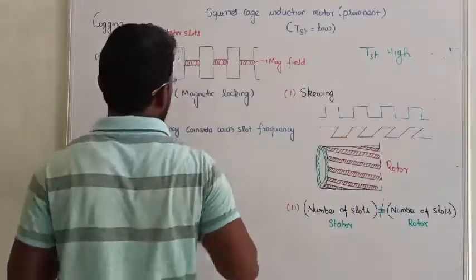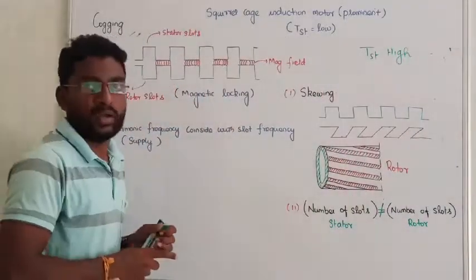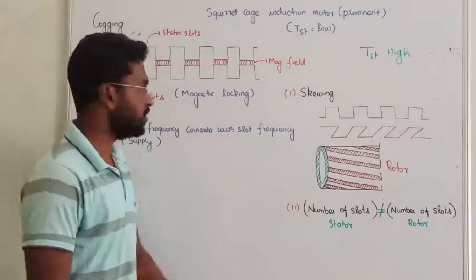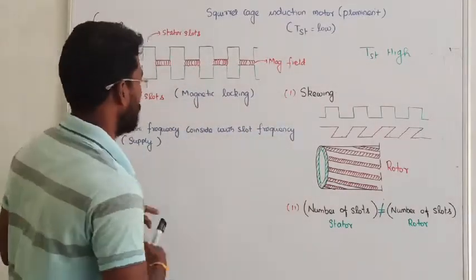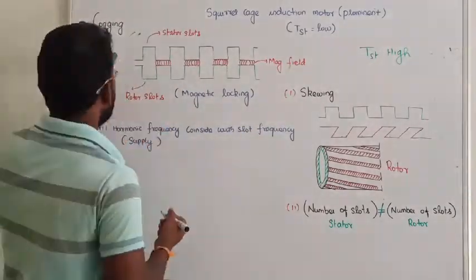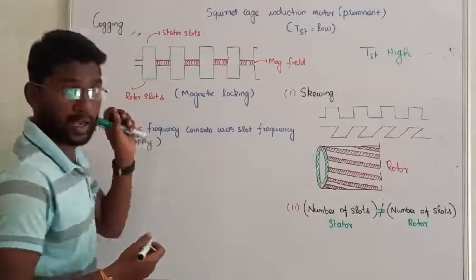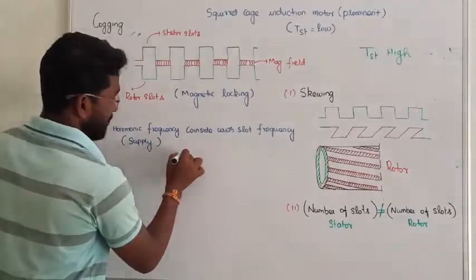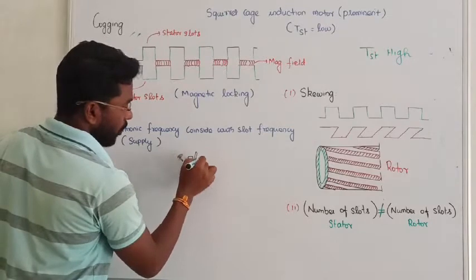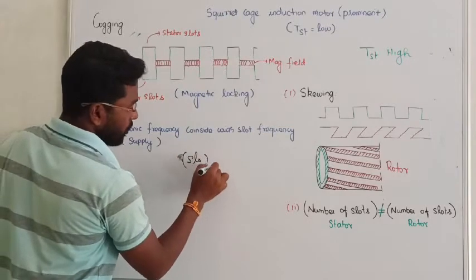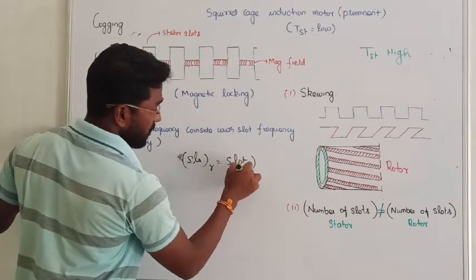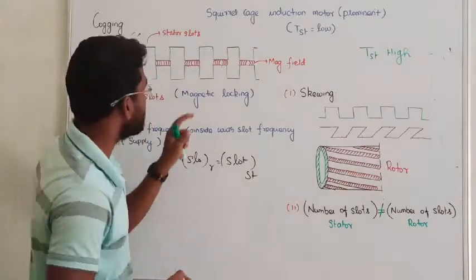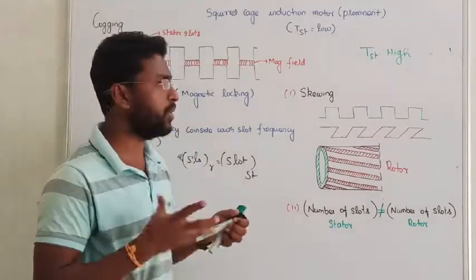Suppose the number of stator slots and rotor slots are equal — that is the problem. If the number of slots on the rotor is equal to the number of slots on the stator, a specific issue arises.